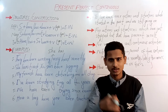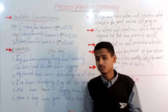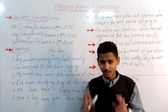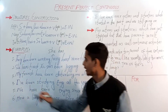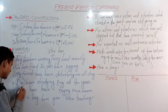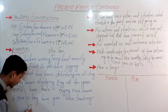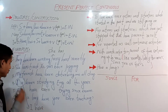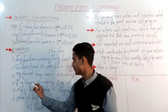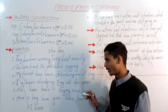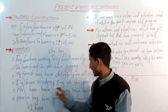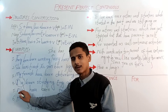The third example is: 'My friends have been disturbing me all day.' It means my friends have continuously been disturbing me — calling my name or doing other activities that are really annoying. The fourth example uses a contraction: 'I've been studying English all this year.' The apostrophe-ve is the contraction of 'I have', meaning throughout the year I have been studying English.